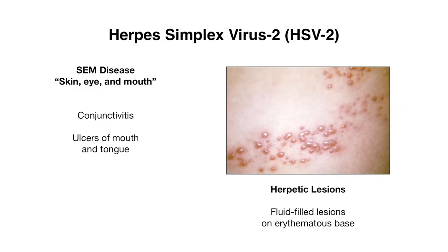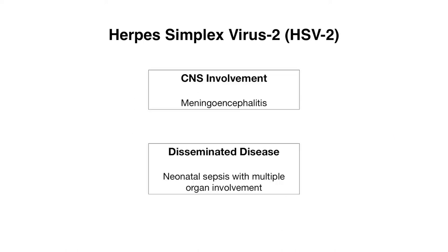Now let's move on to herpes simplex virus 2, or HSV2. Babies can have one of three patterns. First is skin, eye, and mouth disease — conjunctivitis, ulcers of the mouth and tongue, and herpetic lesions, which are fluid-filled lesions on an erythematous base, classically described as dew drops on a rose petal. The second pattern is CNS involvement only, in which babies can have meningoencephalitis. The third is disseminated disease with neonatal sepsis and multiple organ involvement. Surprisingly, these patterns occur with roughly equal frequency.